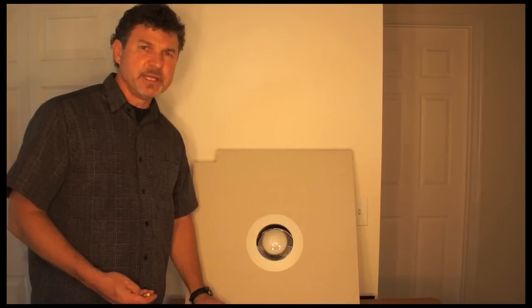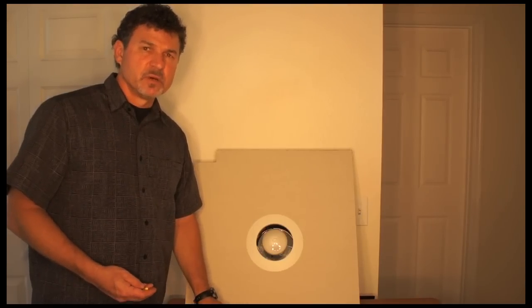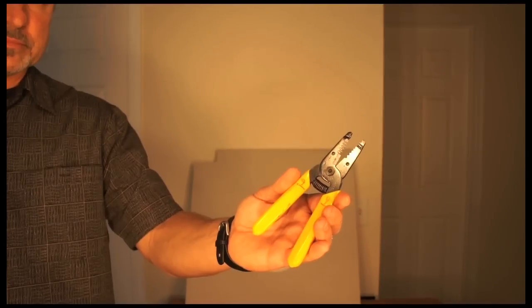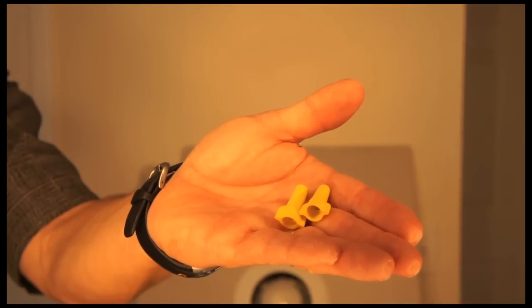In order to fix this recessed light, we need just a couple of things. One is wire strippers, and two, we need two yellow wire nuts.